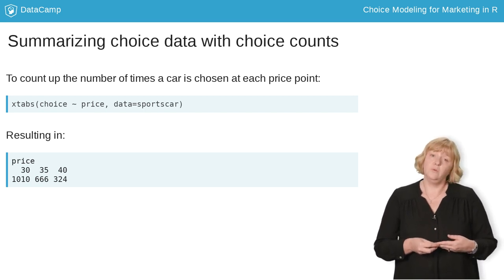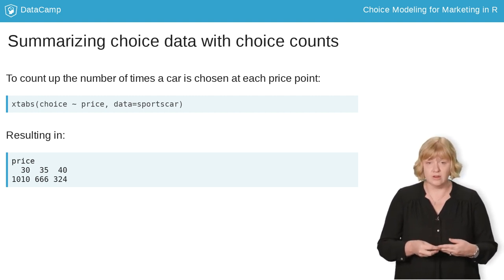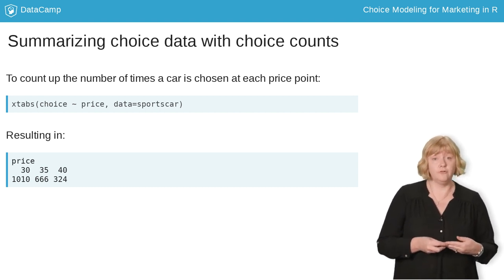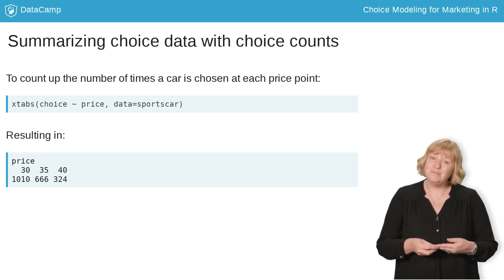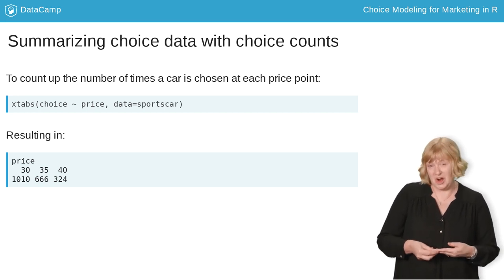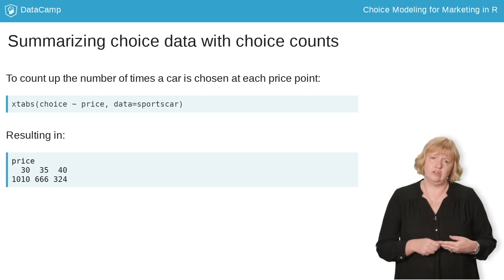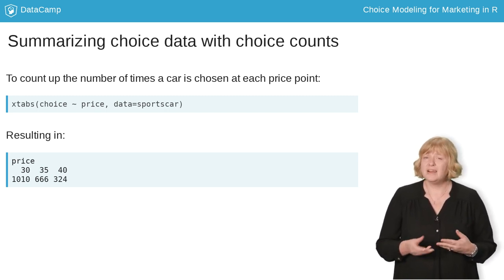From the output, we can see that this data includes 1,010 choices where the chosen car was priced at $30,000 and only 324 choices of cars priced at $40,000. Not much of a surprise there — people like cheaper cars. You could do this same calculation using the dplyr package if you prefer, but I find the formula input for XTabs convenient.